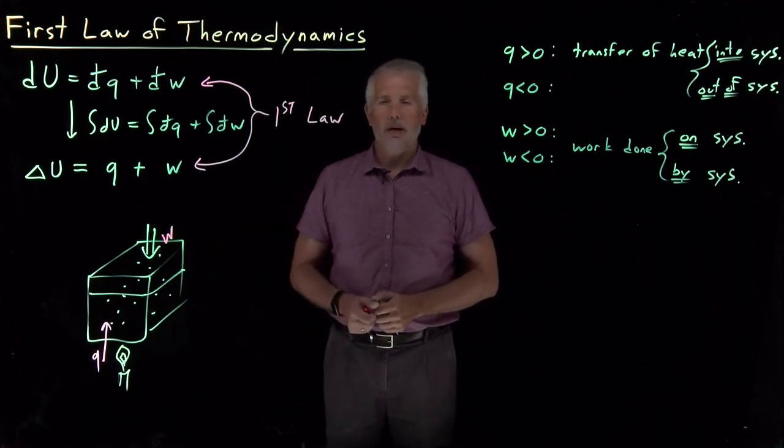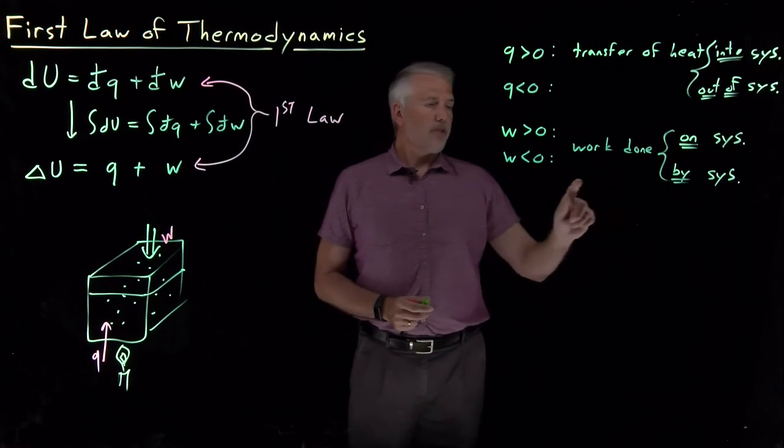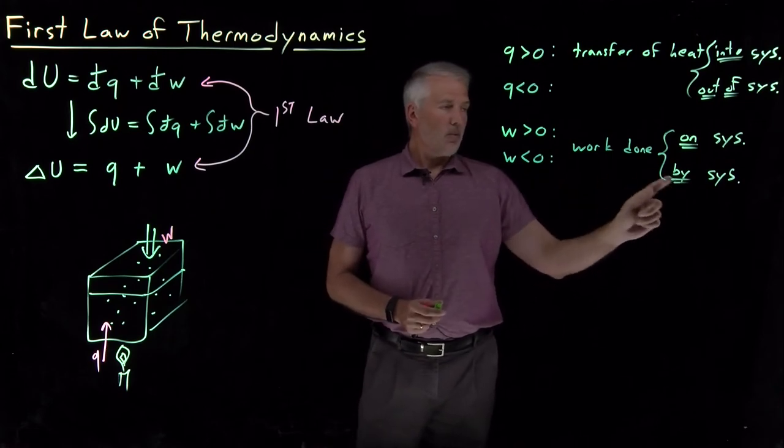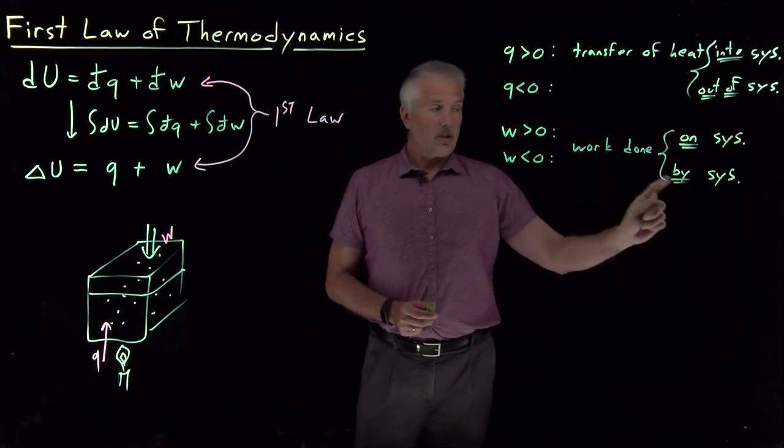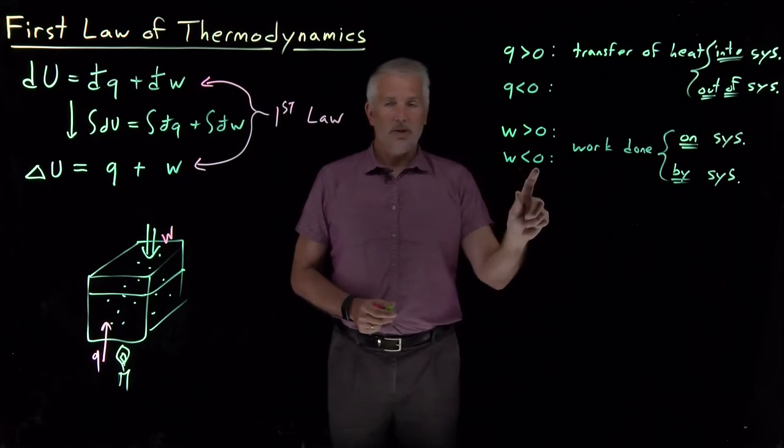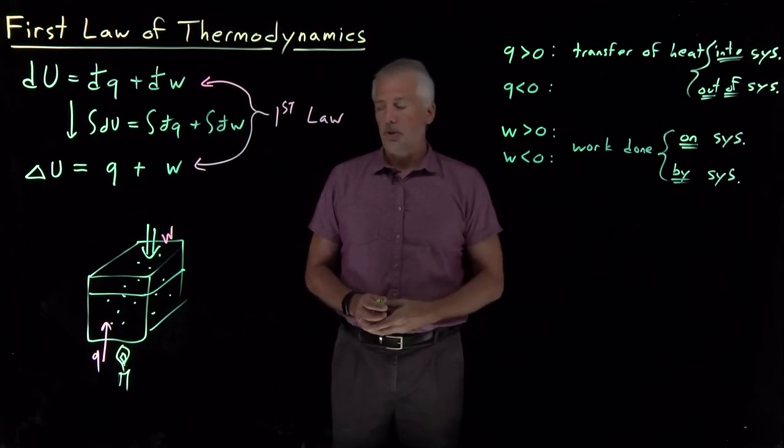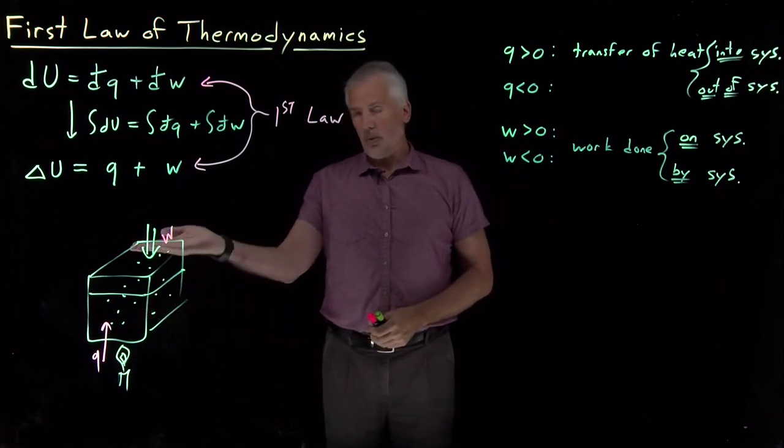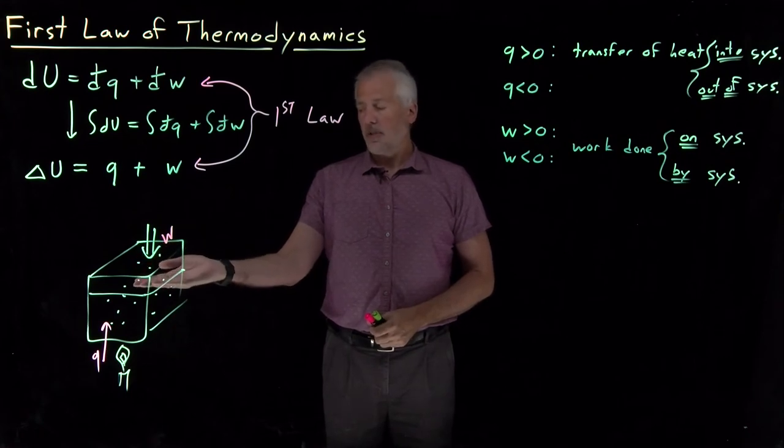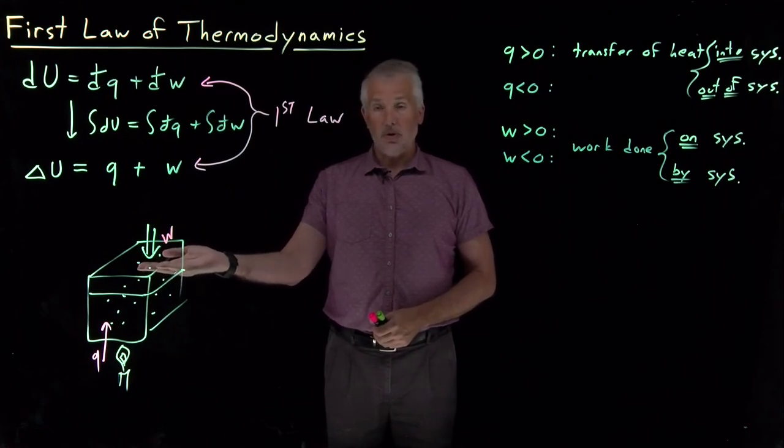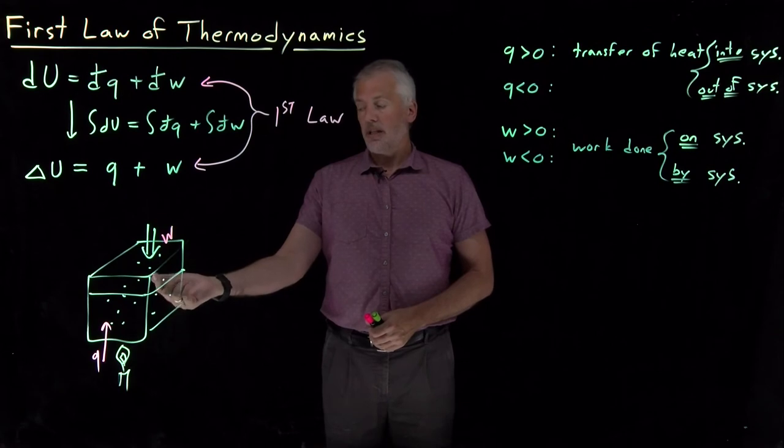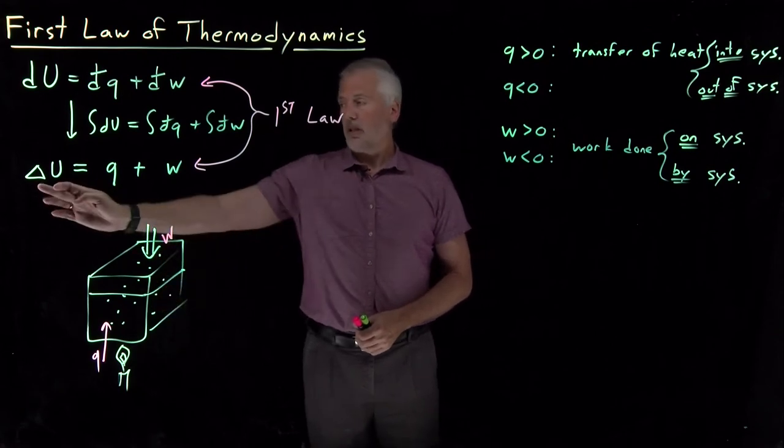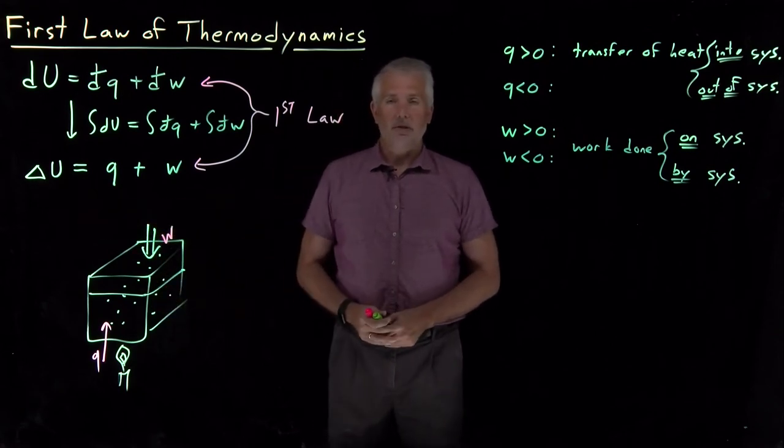So whenever the system does work on the surroundings, when the work is done by the system, that represents a negative value of W. And that's because in order to do that work, it costs the system some energy. The energy of the system is reduced. The energy that it takes to do that work is subtracted from the energy of the system.